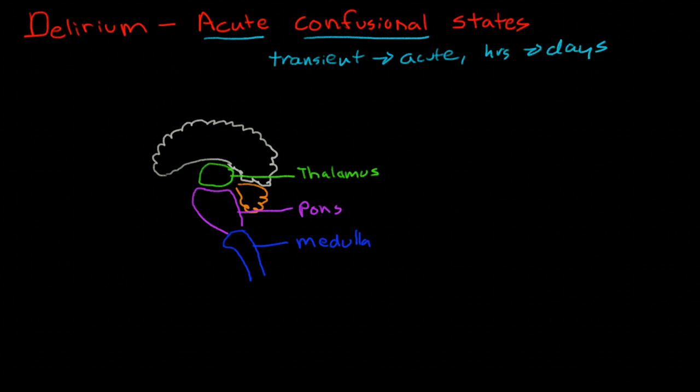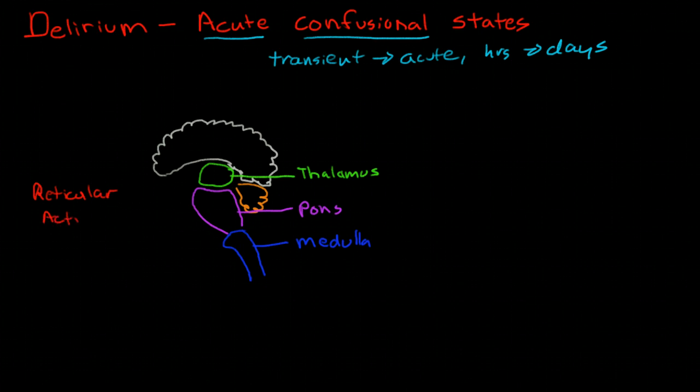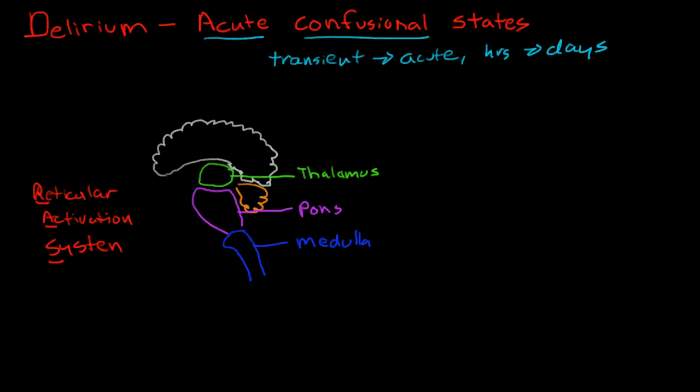So what is the pathophysiology of delirium? The pathophysiology occurs in what is called the reticular activation system, or RAS. The reticular activation system is actually a collection of neuronal centers, neuronal clusters in the thalamus, the pons, the medulla, and a few other places. There's some in the brainstem as well.